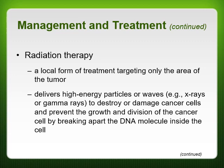Cancer gets treated through a number of ways. Radiation therapy is a local form of treatment targeting only the area of the tumor. It delivers high-energy particles or waves like X-rays or gamma rays, designed to destroy or damage cancer cells and prevent their growth and division by breaking up the DNA molecule inside the cell — targeting DNA so those cells can no longer grow or replicate.